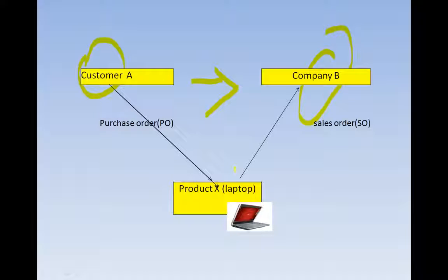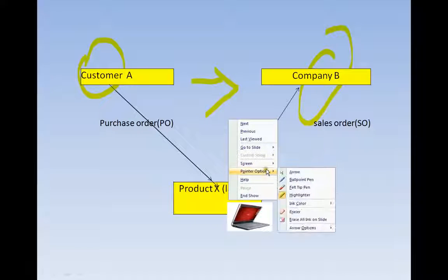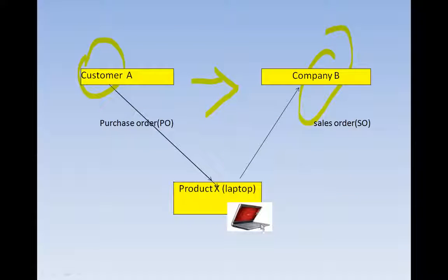What customer A is going to do is he will first raise a purchase order on a product. He will go to a website, or contact through telephone, mobile, or any other communication medium, and then order a particular laptop. This order — which is a purchase order for customer A — is a sales order for company B.